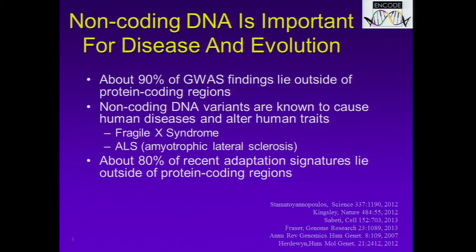Over the last number of years, we have an increasing understanding that non-coding DNA is important for disease and evolution. We know now that about 90 percent of GWAS findings lie outside of protein coding regions. We know that non-coding DNA variants can cause human diseases and alter human traits, such as in fragile X syndrome and ALS. And also about 80 percent of recent adaptation signatures lie outside of protein coding regions.